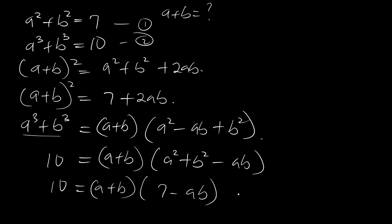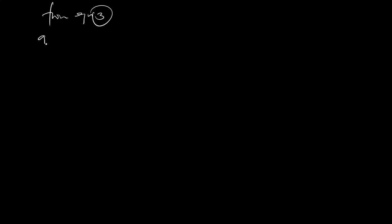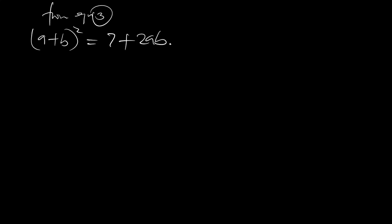This is equation 3 and this is equation 4. From equation 3, we have a plus b squared is equal to 7 plus 2ab. Rearranging, we have a plus b squared minus 7 is equal to 2ab.